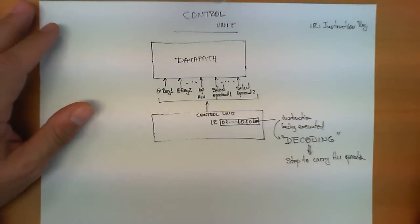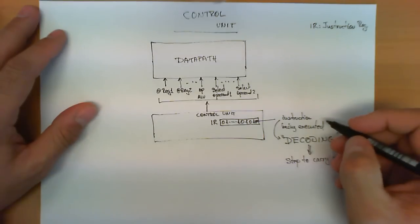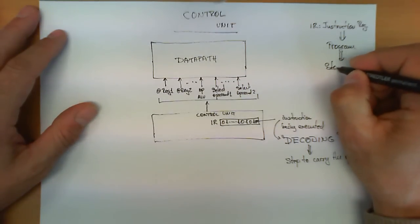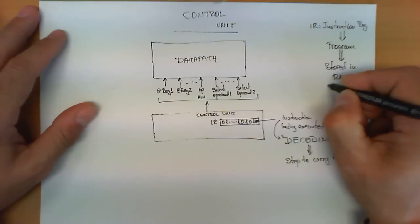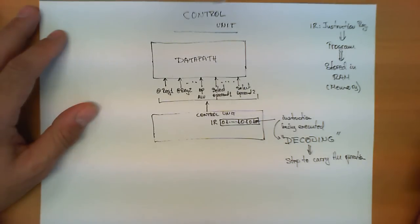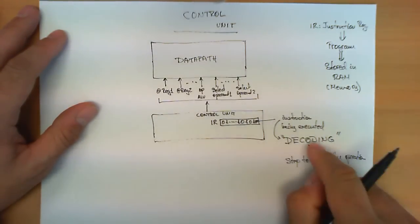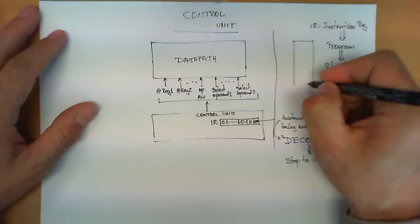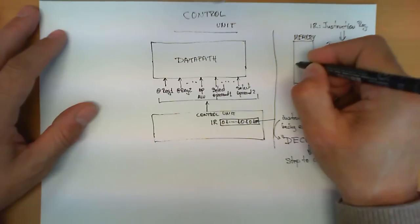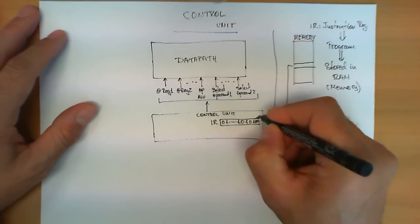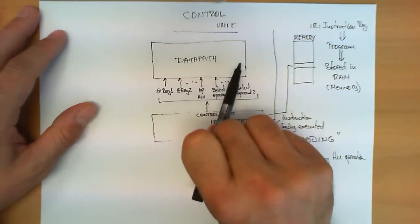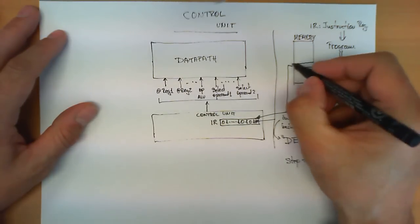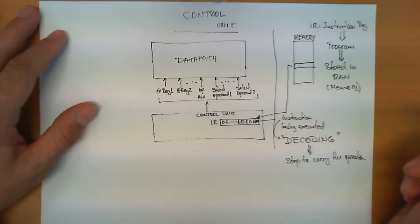Another detail to explain is where this instruction is actually coming from. This instruction is part of a program, and this program is stored in memory or in RAM. This means that the control unit, prior to starting to decode this instruction, needs to get the content from outside the CPU, go to memory, read a certain position, and store its content in the IR. So even before providing control signals for the data path, the control unit must first provide control signals to obtain the memory content from the right location and place it in the instruction register.